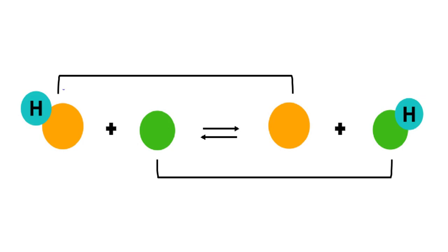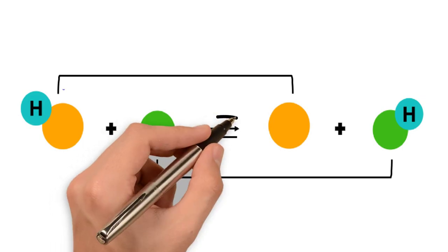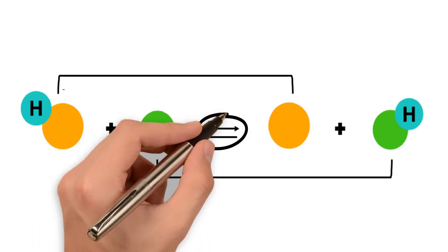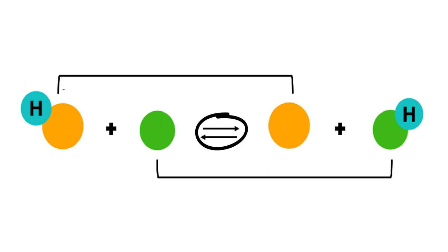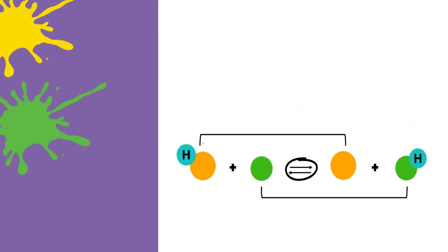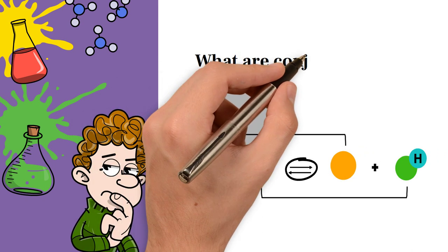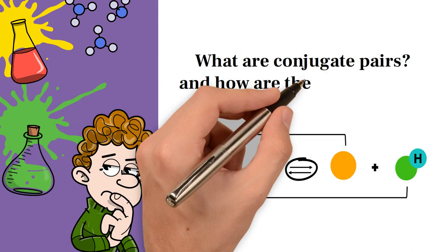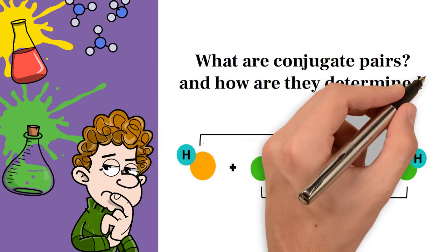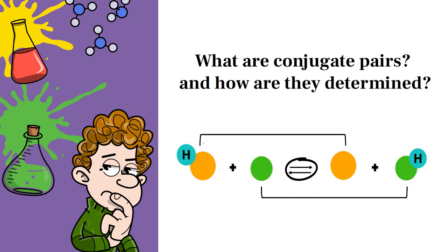Therefore, the process of determining conjugate pairs is applied to reversible reactions — that is, reactions that can occur in both directions. But what are conjugate pairs, and how are they determined? Let's discover that together.